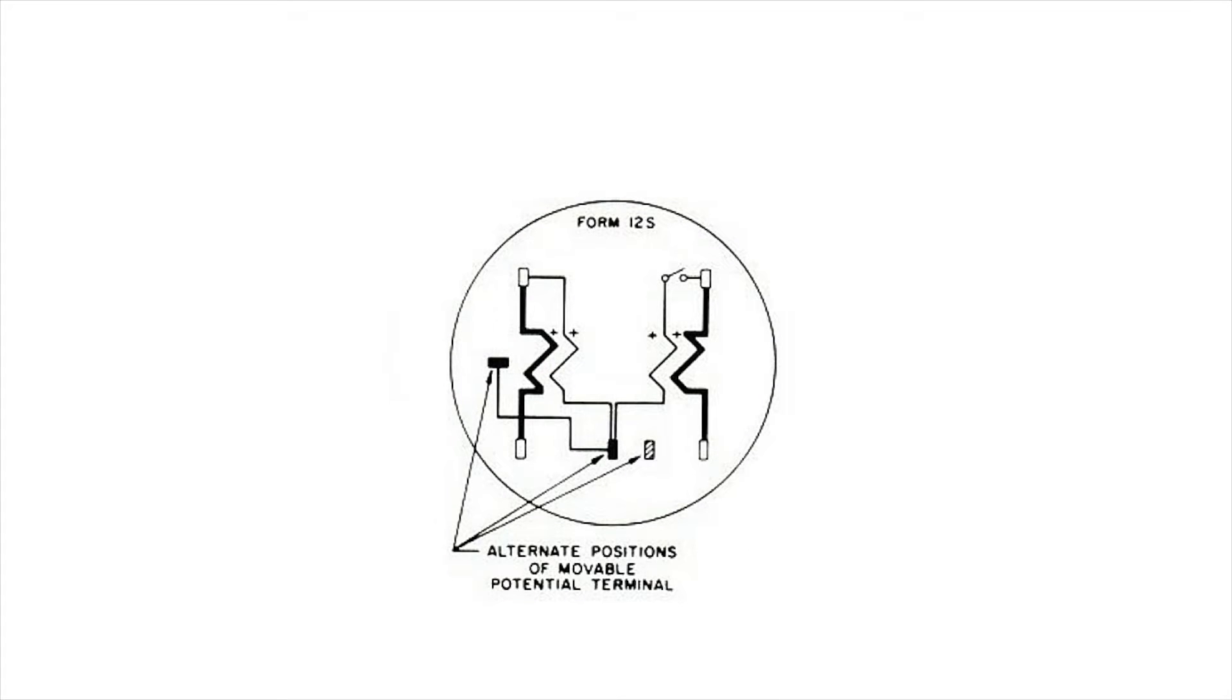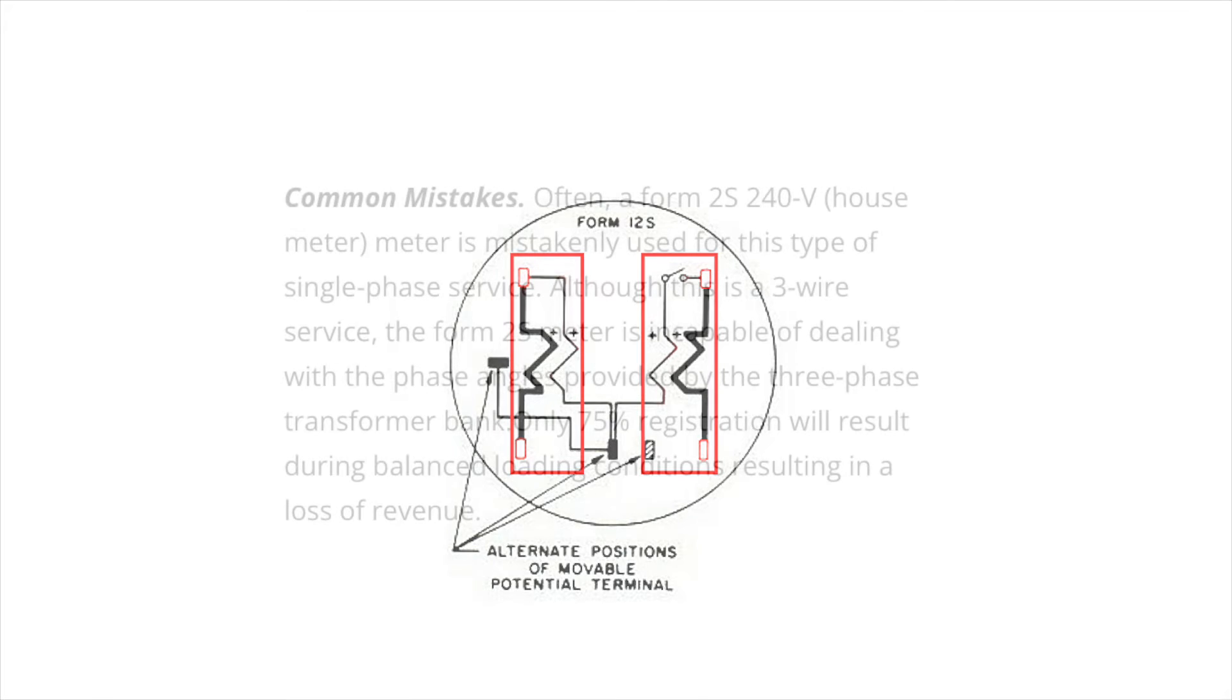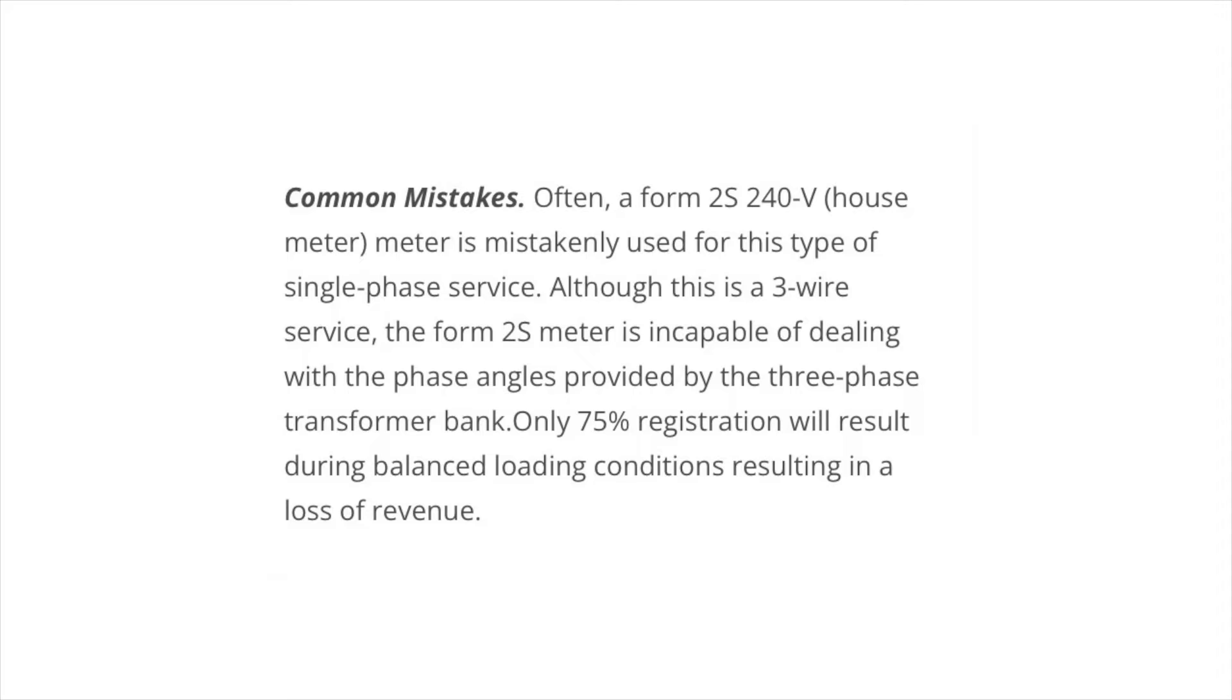As we look at the meter form itself, you can see that we have available two potential coils and two current coils. Each potential coil is with its own current coil, so it's a very simple form of meter and the voltage and the current is all that's needed for each phase.